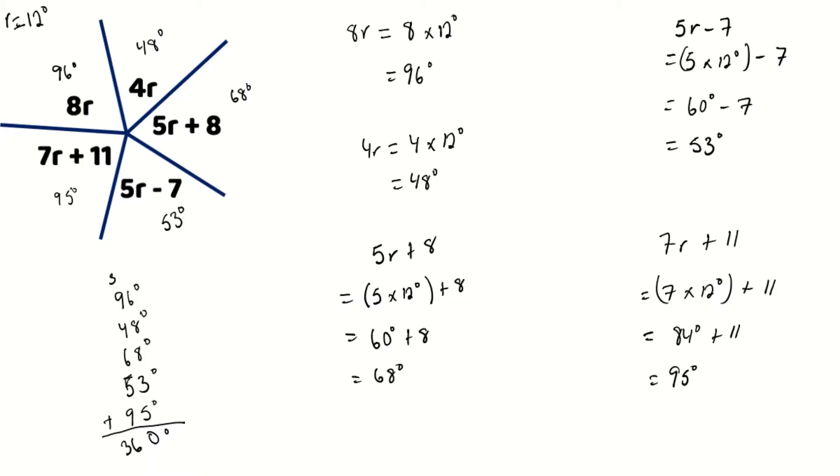So this tells us that the measure that we found for r is correct, and that we also calculated each of our different parts of our diagram correctly. So guys, it's just that easy to calculate these diagrams when we're given them with terms and expressions involved.